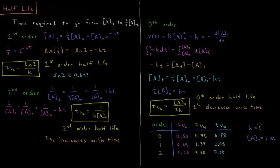For a first-order reaction with K equals one and initial concentration of one molar, at 0.69 seconds half the reactant is consumed. To consume half of what remains takes another 0.69 seconds, reaching the quarter-life at 1.38 seconds. Each subsequent half-life is another 0.69 seconds — this continues forever, confirming the half-life is independent of concentration. For second-order, the first half-life is one second. To consume half of what remains takes two seconds, then four seconds for the next — the half-life doubles each time as concentration decreases.